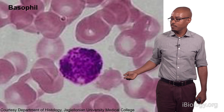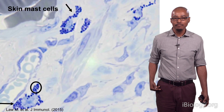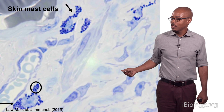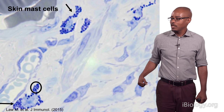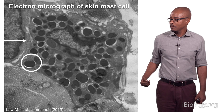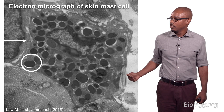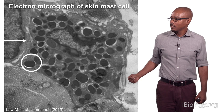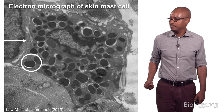Here's what a basophil looks like from a blood smear. You can see the staining and the granules that these basophils have, with red cells around them. Here is a section of skin from a mouse stained with toluidine blue, and you can see that the mast cells are situated in the skin, with granules visible inside them. Here is an electron micrograph of a skin mast cell, showing very high resolution of the granule structures — including the one circled in white — that are filled with pharmacological agents these cells will release when activated.